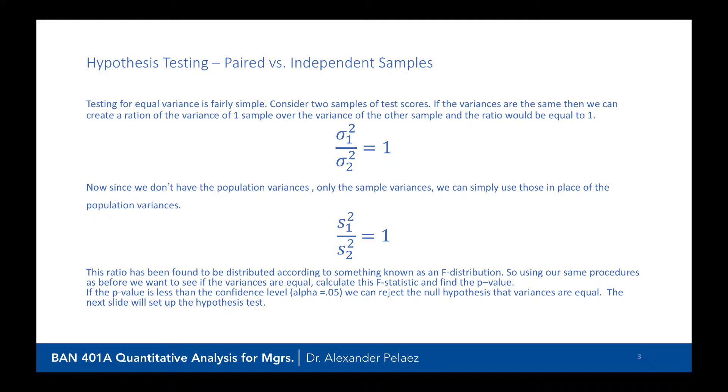Now, statistically, this is shown to be distributed along another type of distribution called an F-distribution. So we're introducing a new distribution. But we're going to use the same procedures as we had in the past. We're going to, in this case, instead of calculating a t-statistic, we're going to calculate an F-statistic.